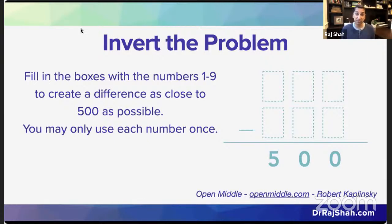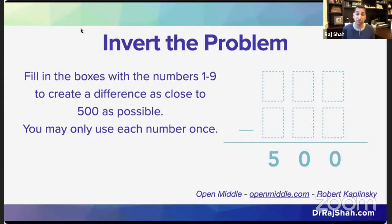If you're familiar with Robert Kaplinski's open middle problems — there's the link on the slide — a lot of them give you the answer and ask you to figure out what the inputs are. This is one of my favorites: it's a subtraction problem where you have to fill in six boxes with the numbers one through nine, using each only once, trying to get as close to 500 as you can. This is a little bit of an inversion because I'm giving you the answer and asking for the inputs. This can be a really nice way to turn a standard problem into a puzzle and really get kids to think. I love open middles because students are going to have to do a lot of subtracting to figure out this one problem — it's like a one-problem worksheet with 50 problems embedded in it.